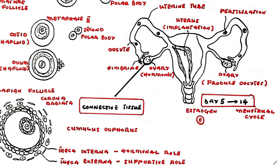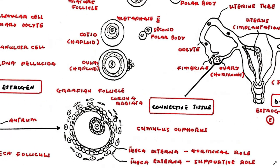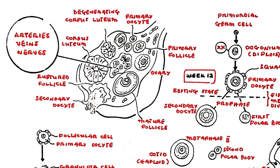Finger-like projections from the uterine tubes called the fimbria collect oocytes when they are expelled from the ovaries. The oocyte is carried into the uterine tube for fertilization and subsequent implantation into the walls of the uterus. The adult ovary is predominantly made up of connective tissue supporting a large number of follicles. Blood vessels and nerves are concentrated within the central medulla, whereas follicles are found in the outer cortex in varying stages of development.